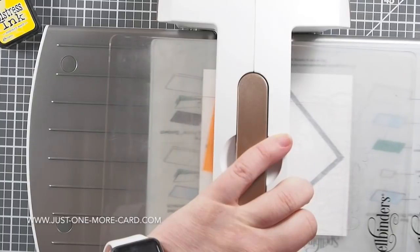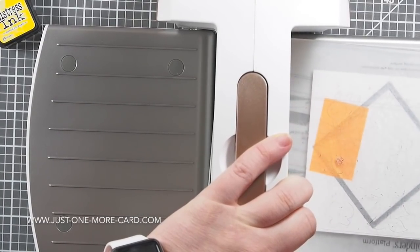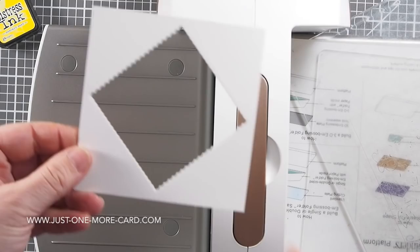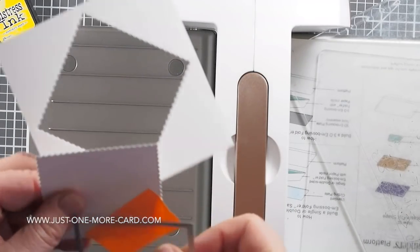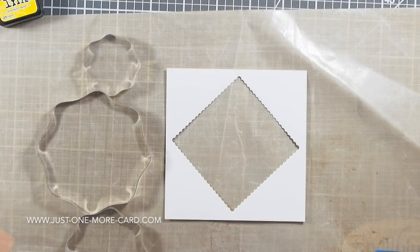As always, the products that I use are linked in the video description below. I started out by die cutting a window into a square piece of cardstock on this diagonal, intentionally. This will be my leftover piece that I can use for another project later on.